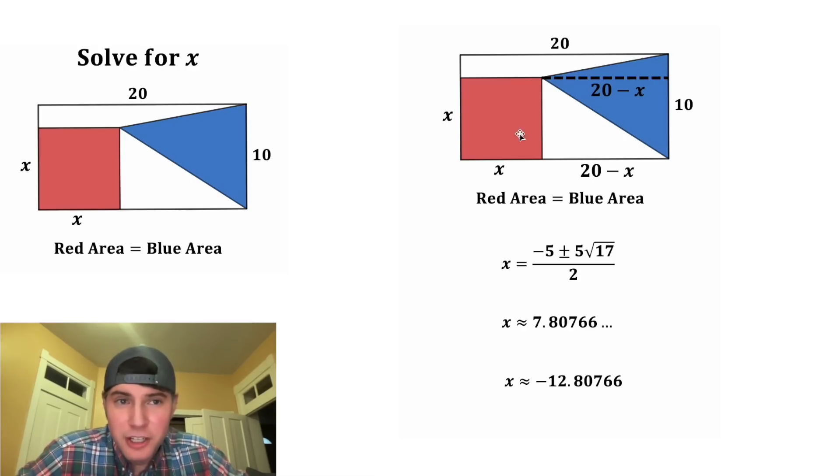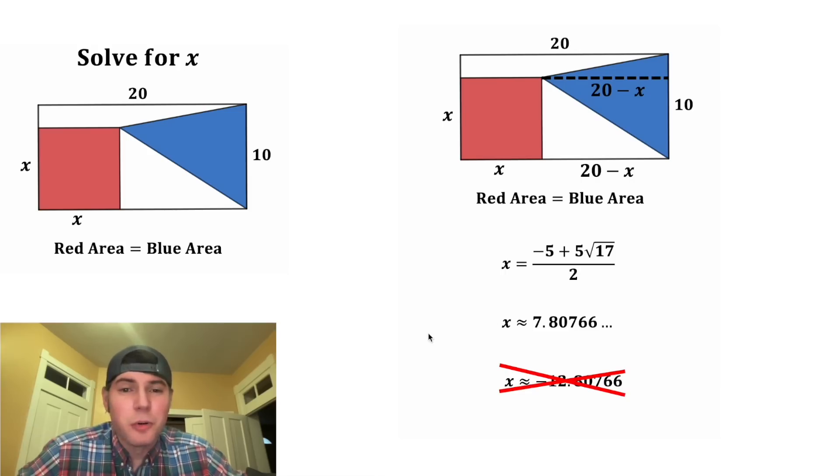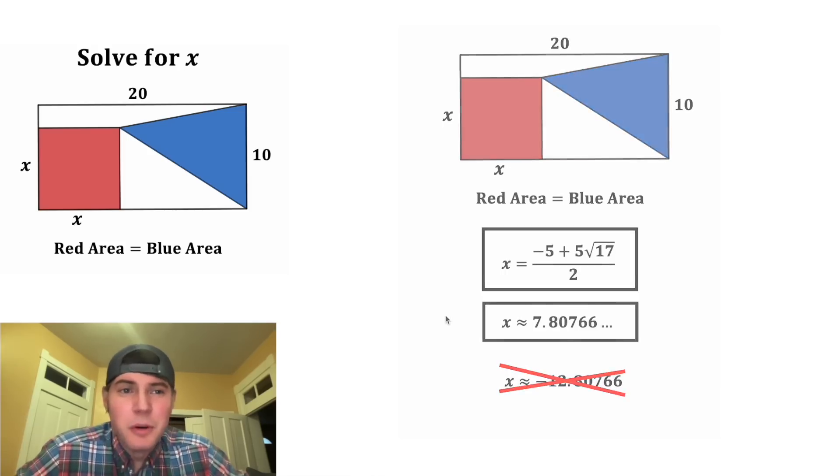At this point, we typically look at the problem and say, oh, we can't have a negative value of x, so we cross this out. And then we would also change this plus minus into a plus. We'd say this is the answer to our question, let's put a box around it. And then we would be done.